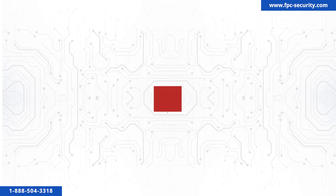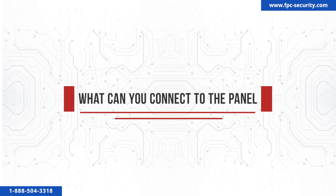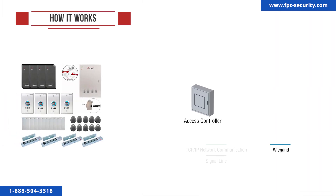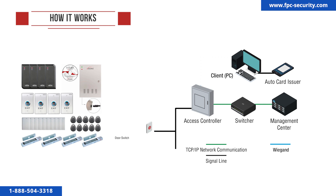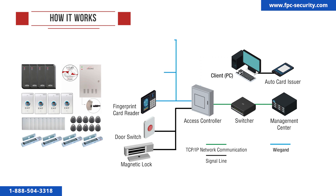Our access control panels are able to connect to any Wiegand 26 or 34 bits keycard card readers, to any 12VDC locking device, an exit device such as exit buttons, wireless receivers, PIR motion detectors, etc., by hardwiring these devices to the panel on its corresponding terminal blocks. This illustration shows a typical installation.